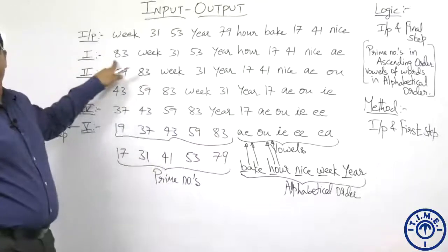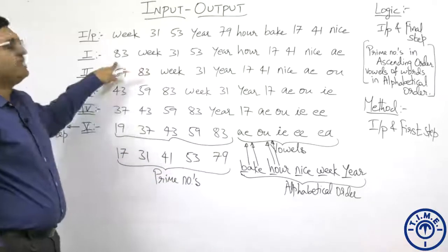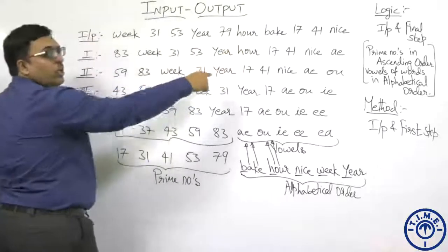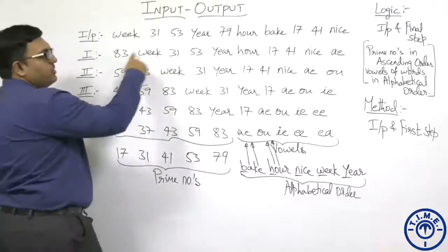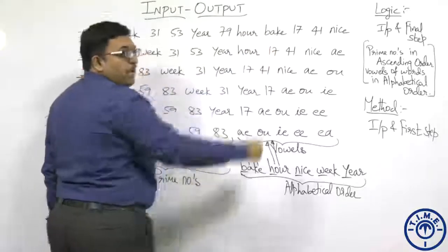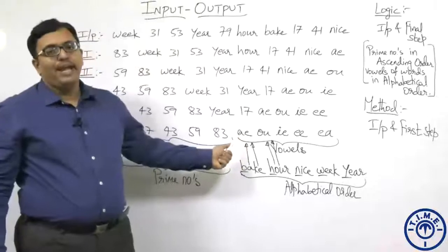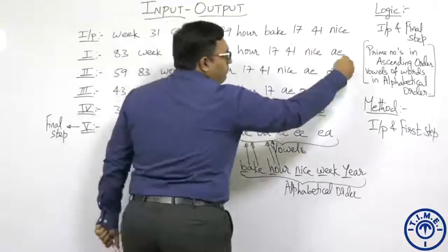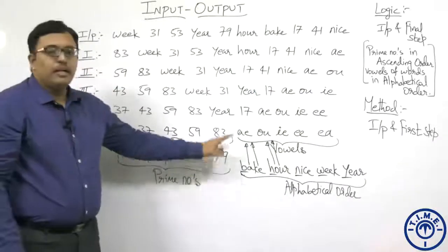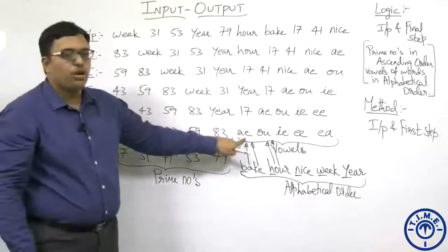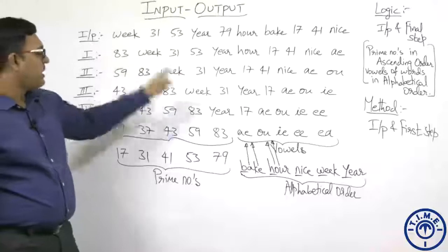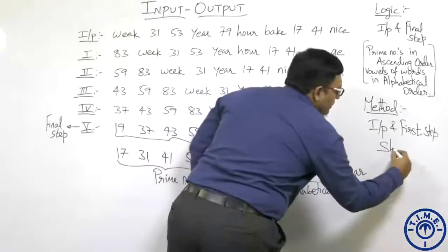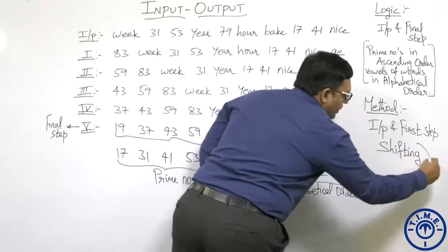He is arranging 83 first. 83 is the last number in the output, so it is arranged first. Then: week, 31, 53, year. 79 will not come because from 79 the next prime taken is 83. So hour, then bake — bake will not come because AE comes last. Then 17, 41, nice. From bake we get AE. So simultaneously, he is arranging a number and a pair of vowels in step 1: the last number is arranged first, the first pair of vowels is arranged last, and the remaining elements follow the shifting method.